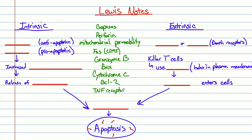In Lewis Notes, we review the highest-yield content. Breaking out paper and writing this down helps retention. For the intrinsic pathway: anti-apoptotic is BCL2 (anti has four letters, BCL2 has four letters), and pro-apoptotic is BAX (pro has three letters, BAX has three letters). If BAX is stimulated, you get increased mitochondrial permeability.